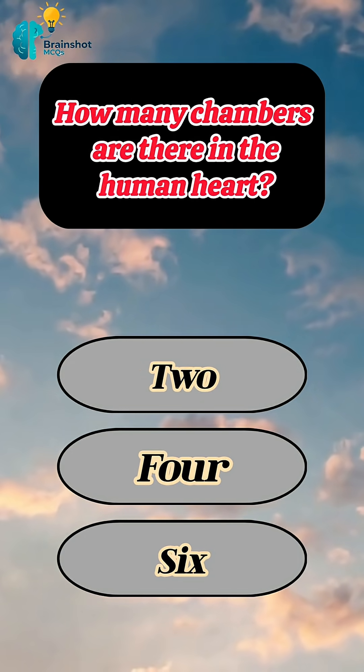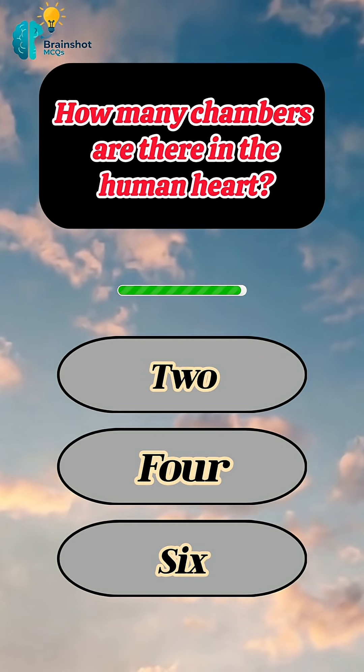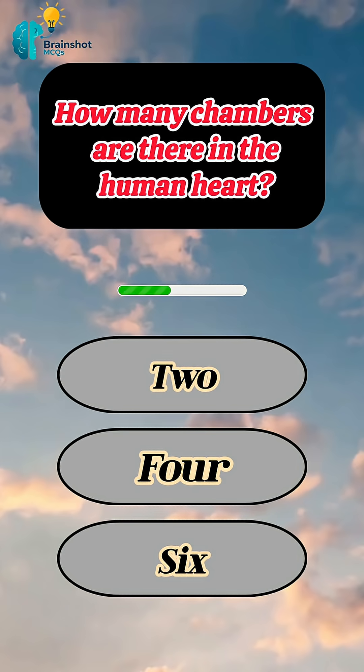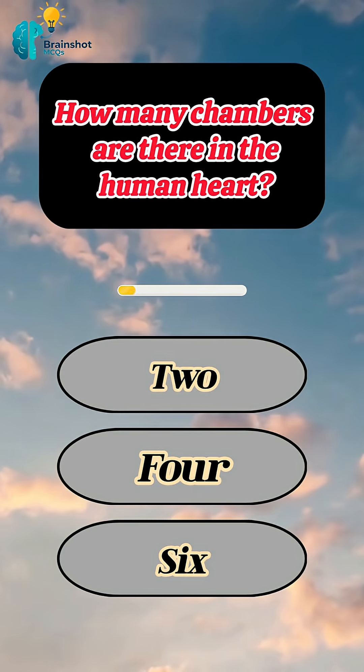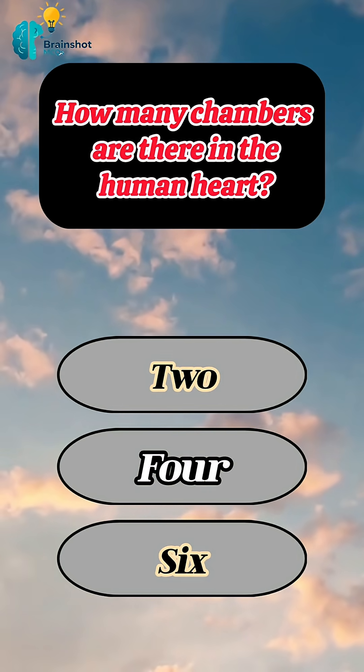How many chambers are there in the human heart? Correct answer: 4.